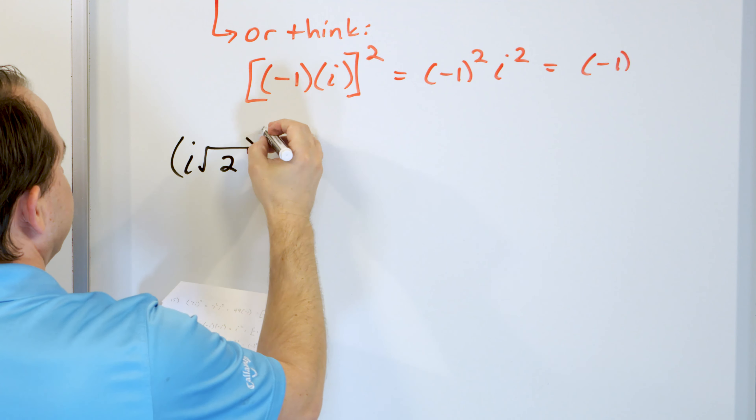What if we have negative i times the square root of 3, quantity squared? Apply the square to negative i and to square root of 3 separately. Negative i times negative i gives positive i squared. The square cancels the square root leaving 3. Positive i squared is negative 1, times 3 gives negative 3. That's the final answer.